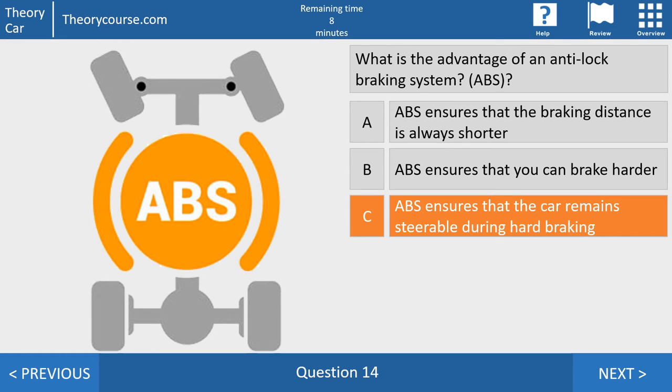The right answer is answer C. If you have ABS, the tires will rotate. And if the tires rotate, then you can steer the car. So, ABS is not that you can brake harder. Or that the braking distance is shorter. Or your following distance may be shorter. No. The only right answer at the CBR. ABS ensures that the car remains steerable. And in Dutch, ABS betekent altijd blijven sturen. Always be steerable.